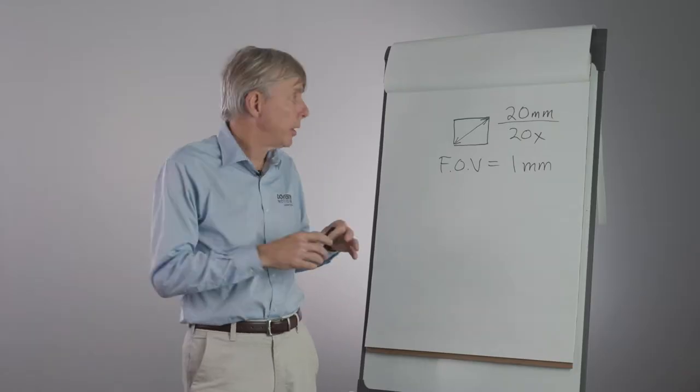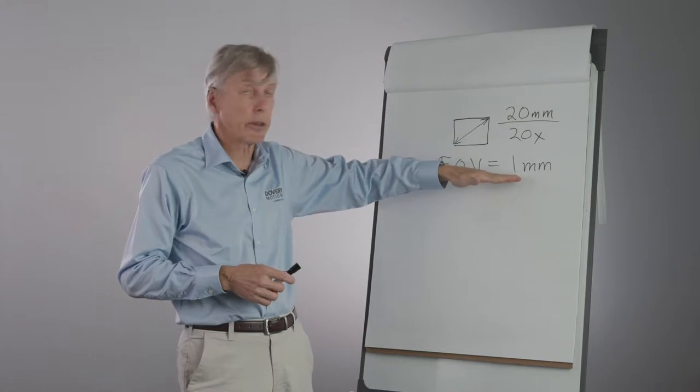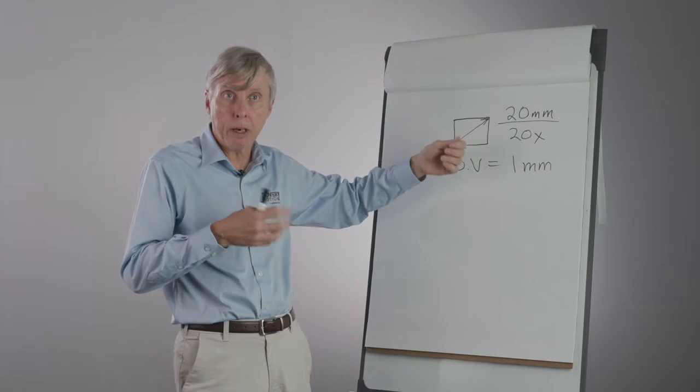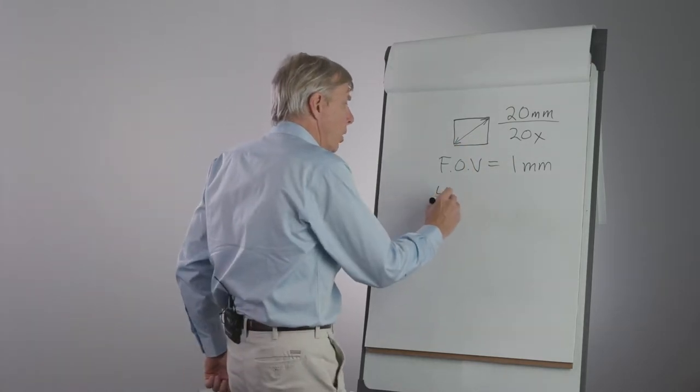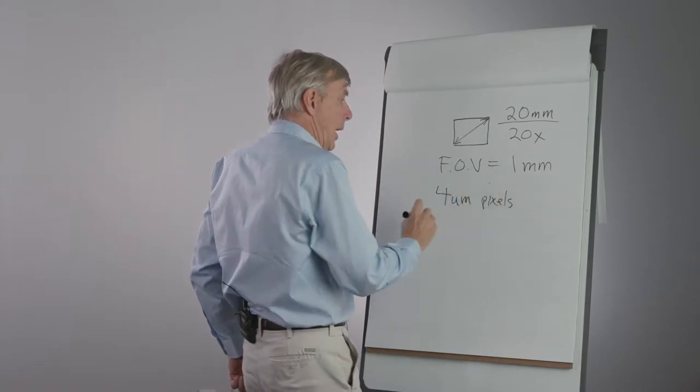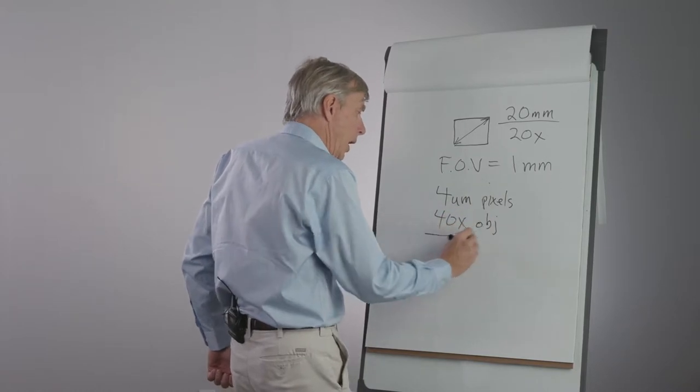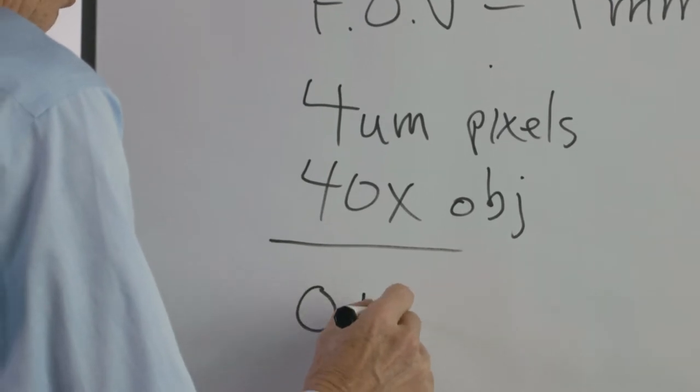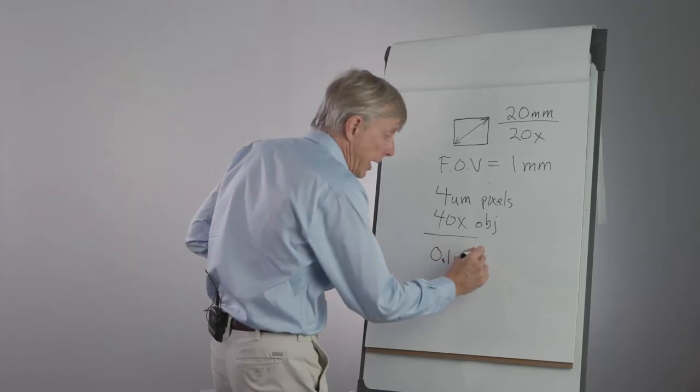In addition to the magnification reducing the size of the sensor down to the size of the field of view on the sample, it also does the same with the pixels. So for example, if we had four micron pixels and a 40x objective, that would be 0.1 micron of geometric resolution, or 100 nanometers.